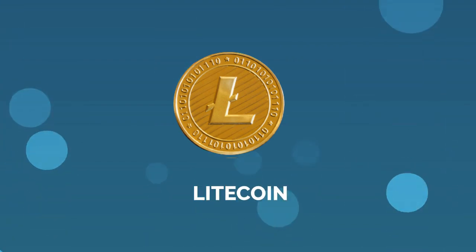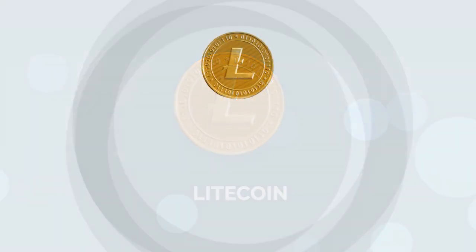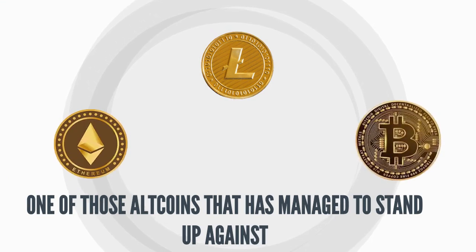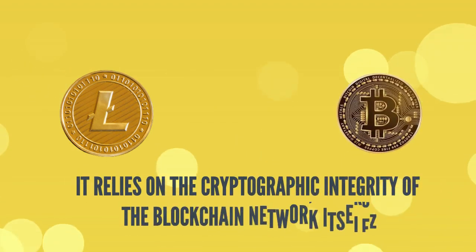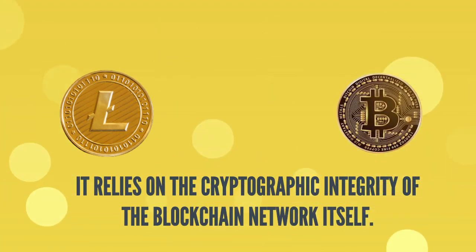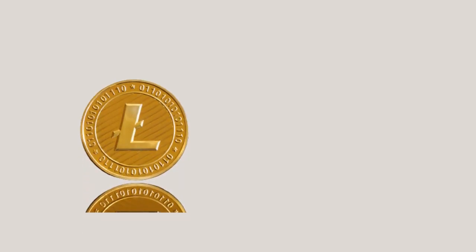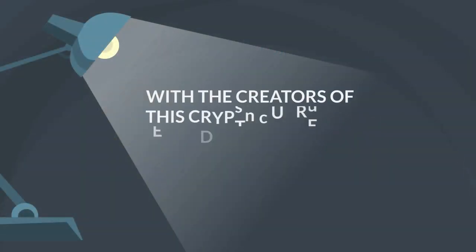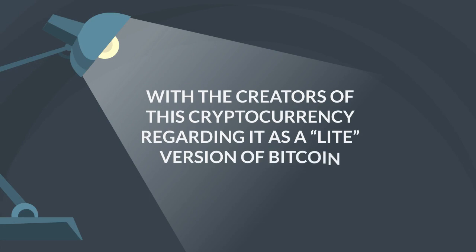The last name on this list of ours is Litecoin. This is one of those altcoins that has managed to stand up against Bitcoin and Ethereum. Litecoin is similar to Bitcoin, where it relies on the cryptographic integrity of the blockchain network itself. This coin was launched soon after Bitcoin in 2011, with the creators of this cryptocurrency regarding it as a light version of Bitcoin.